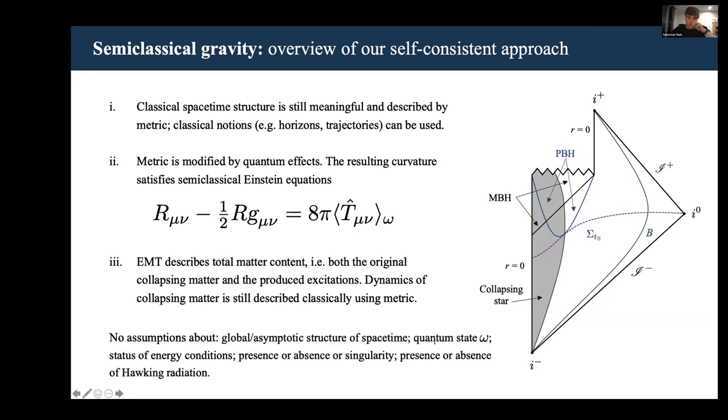We do not make any a priori assumptions about the asymptotic structure of spacetime or the quantum state omega, energy conditions whether they're satisfied or violated, whether or not there is a singularity, and in particular, we do not assume the presence or absence of Hawking radiation.